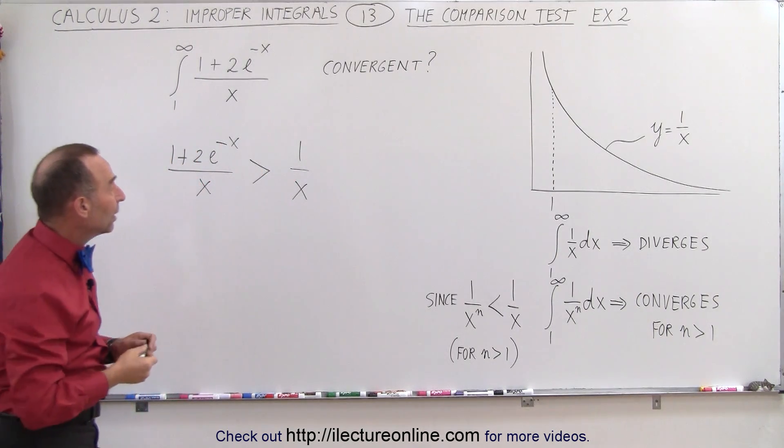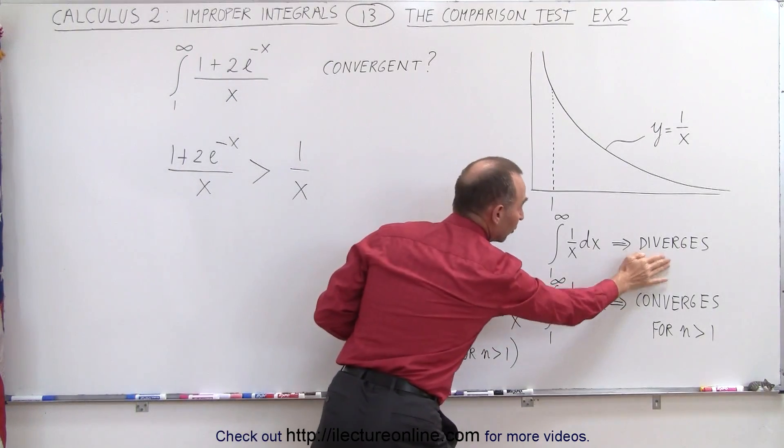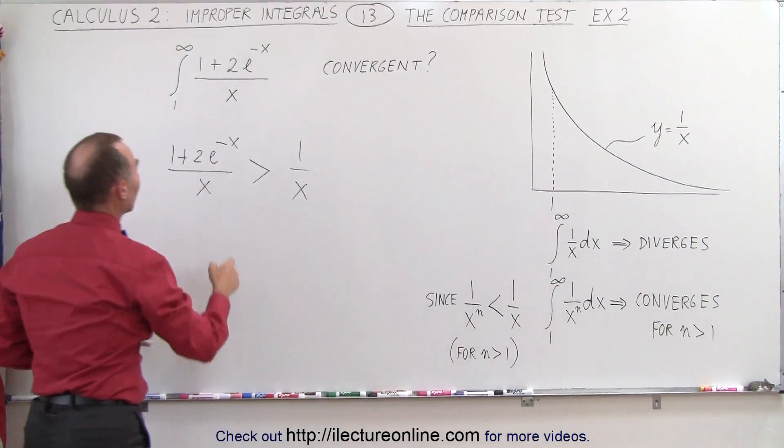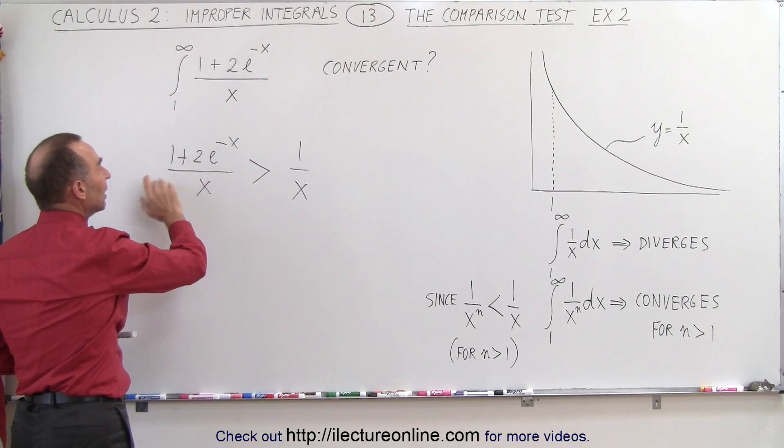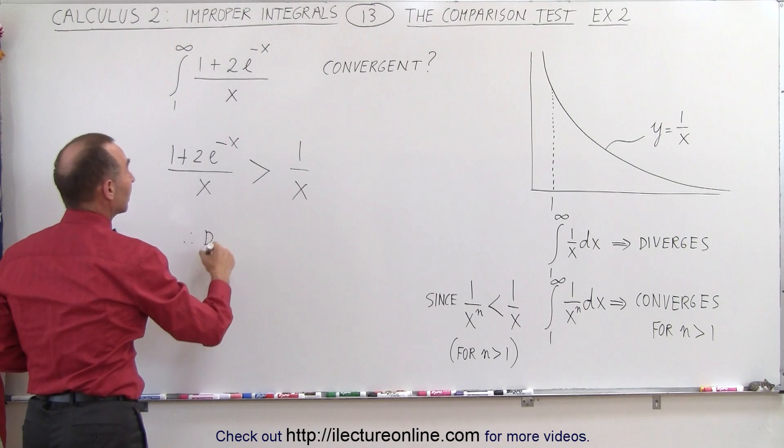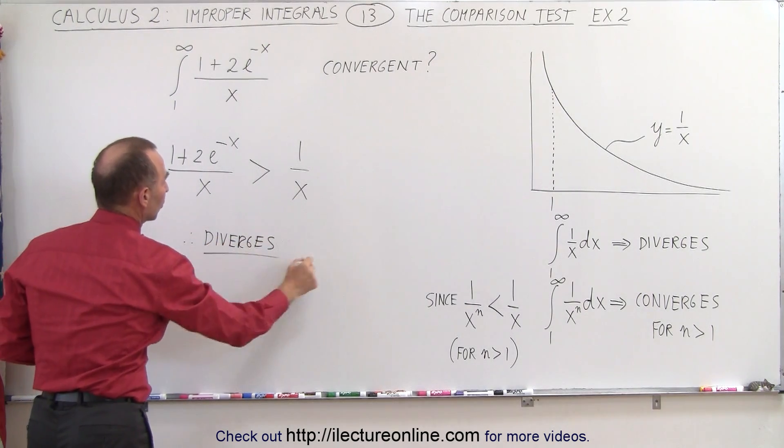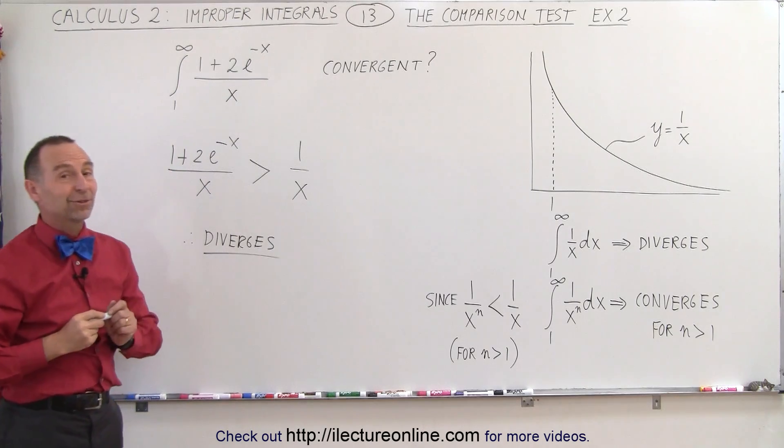Since we already know that the integral of 1 over x from 1 to infinity does not converge, that means this integral from 1 to infinity will also not converge. So therefore, by simply looking at the comparison test, we know that that will diverge. And that's how it's done.